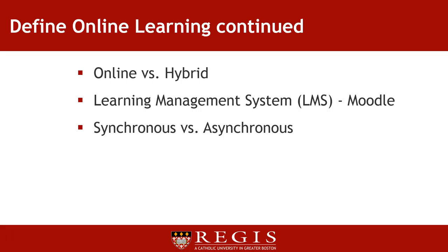Online learning can also be blended or hybrid. Blended or hybrid learning combines both face-to-face time in the standard classroom and activities online. It could be the traditional face-to-face classroom combined with online technology, or it could be a course that meets once a week face-to-face and also completes online activities on a scheduled basis.